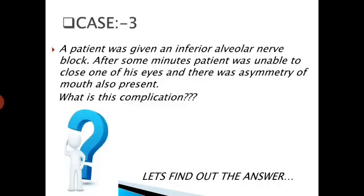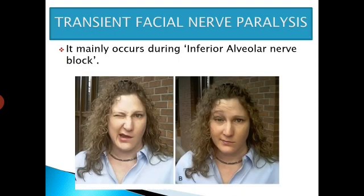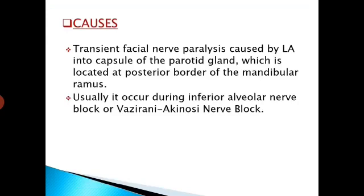Case No. 3. A patient was given an inferior alveolar nerve block. After some minutes, the patient was unable to close one eye and asymmetry of the mouth was also present. What is this complication? The answer is transient facial nerve paralysis. It mainly occurs during inferior alveolar nerve block and is caused by local anesthesia injected into the capsule of the parotid gland, located at the posterior border of the mandibular ramus.